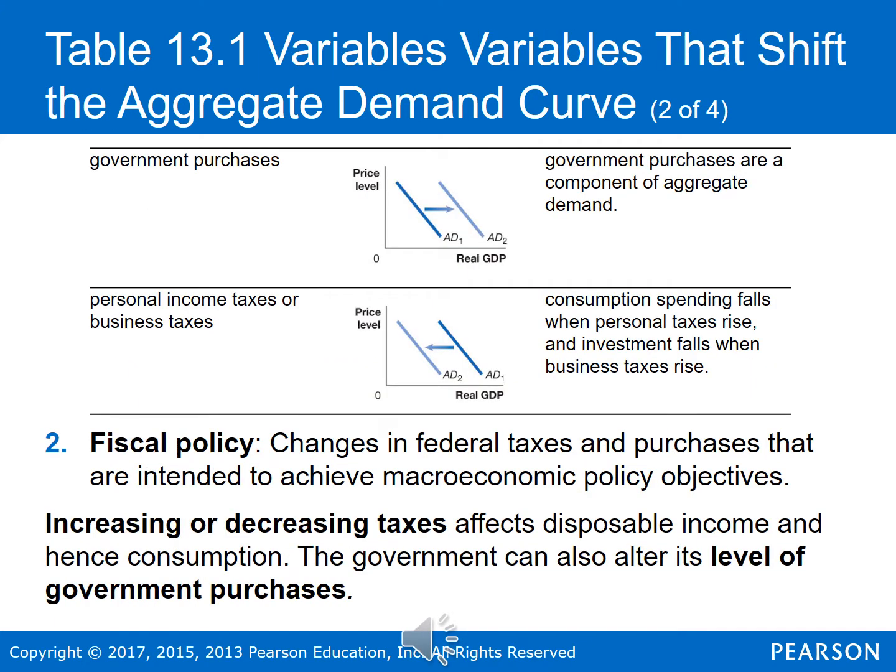The other type of government policy is fiscal policy — changes in federal taxes and federal purchases intended to achieve macroeconomic policy objectives. Because government purchases are one of the components of aggregate demand, an increase in government purchases shifts the aggregate demand curve to the right, and a decrease shifts it to the left. An increase in personal income taxes reduces households' disposable income and consumption spending, shifting the aggregate demand curve to the left; a decrease shifts it to the right. An increase in business taxes reduces the profitability of investment spending and shifts the curve to the left, while a decrease in business taxes shifts it to the right as businesses have greater profitability and are more likely to engage in investment spending.